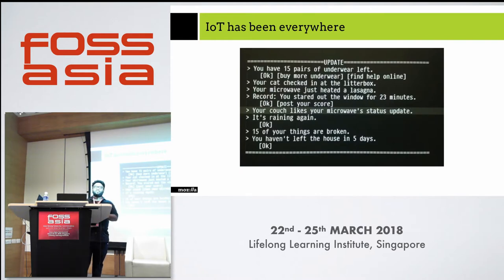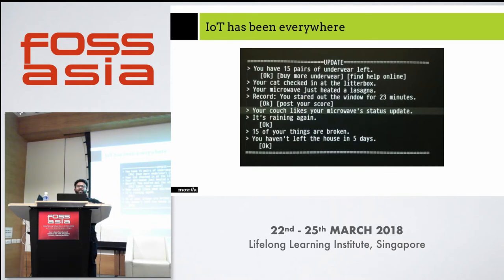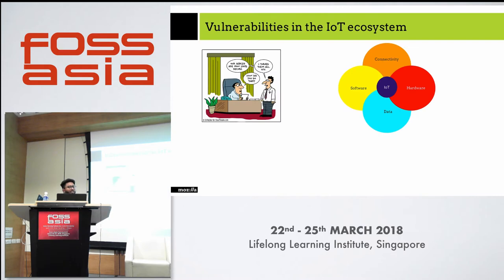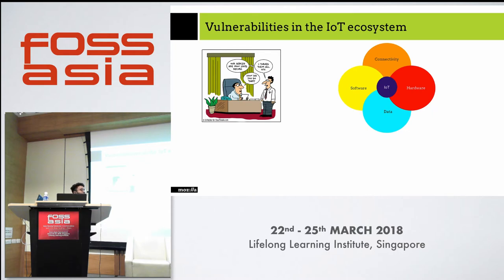Think of a scenario where our IoT device can share information — like it can tell if we have been out of our house or not. That's really something we have to start thinking about. Now let's look at the vulnerabilities in the IoT ecosystem across the four parts we discussed: the hardware, the data, the software, and the connectivity.